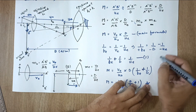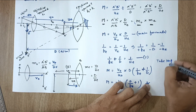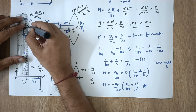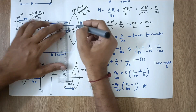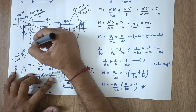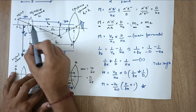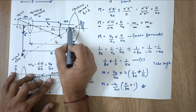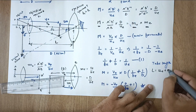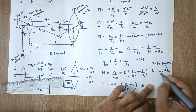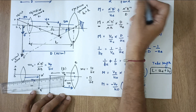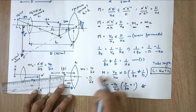One more concept: tube length L. Tube length is the distance from the center of the objective to the center of the eyepiece, and it equals vo + ue (excluding signs, as it is a sum). In part two of the video, we will cover case two — the relaxed eye where the final image is formed at infinity — and also how to remember both formulas.